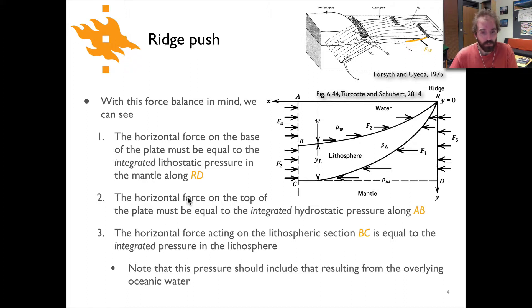The horizontal force on top of the plate, that would be this set of vectors labeled f2, then must be equal to the integrated hydrostatic pressure from point a to point b. And so in that case you're looking at the pressure as a result of the overlying water from point a to b, from basically the elevation of the ridge down to the surface of the lithosphere where it reaches the sort of abyssal depths along this line ab.